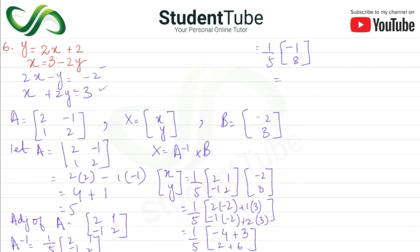When we multiply, we get x equals -1 upon 5 and y equals 8 upon 5. Equating, x value is -1/5 and y value is 8/5, which cannot be simplified further. So solution set is {-1/5, 8/5}, answer.